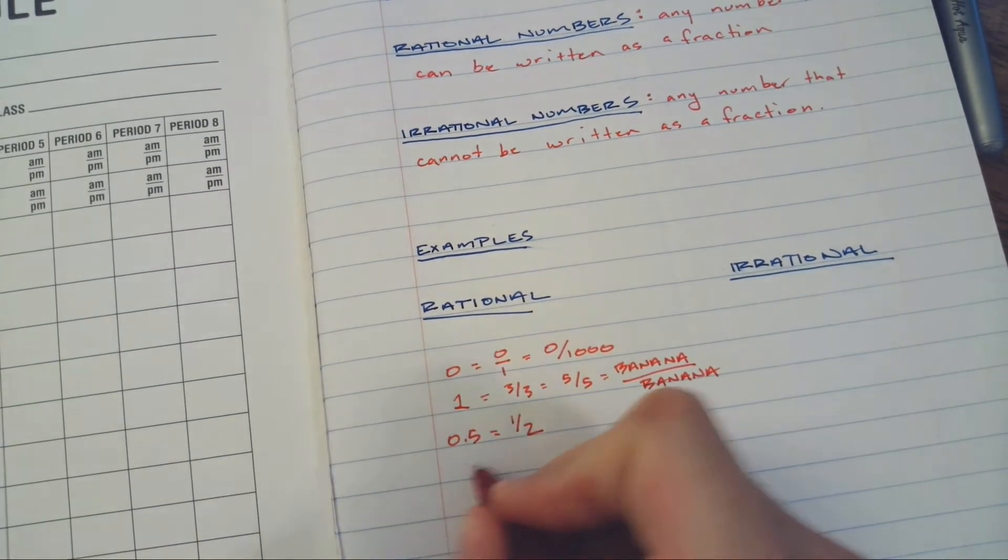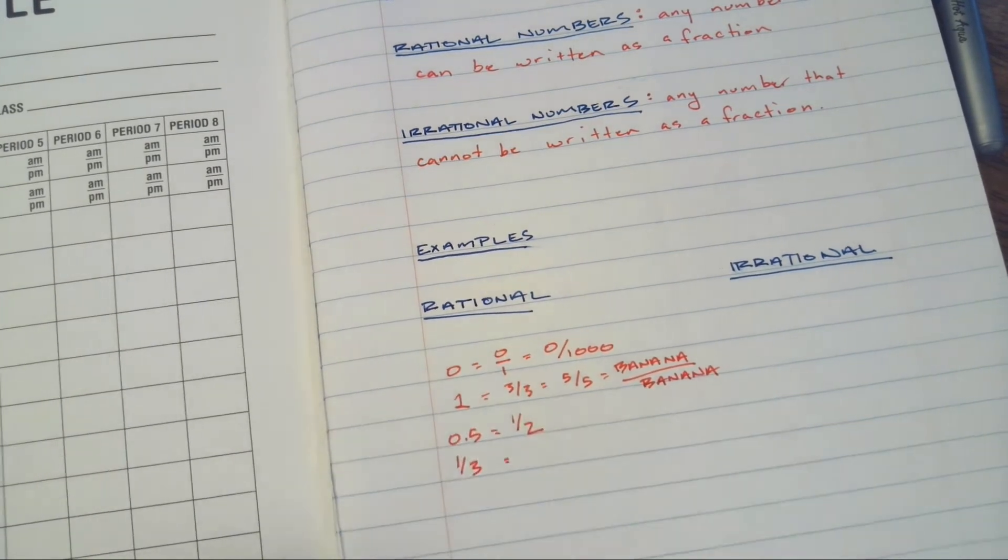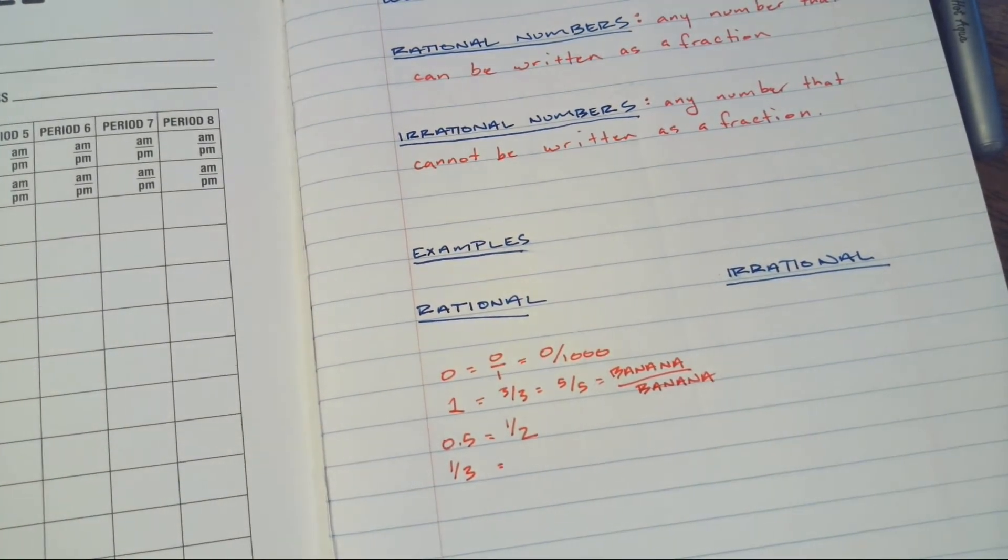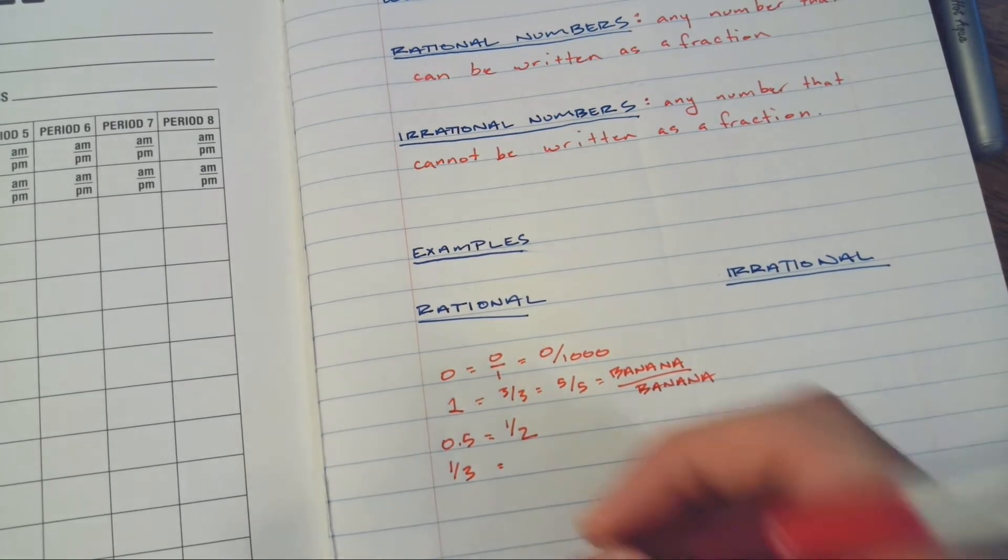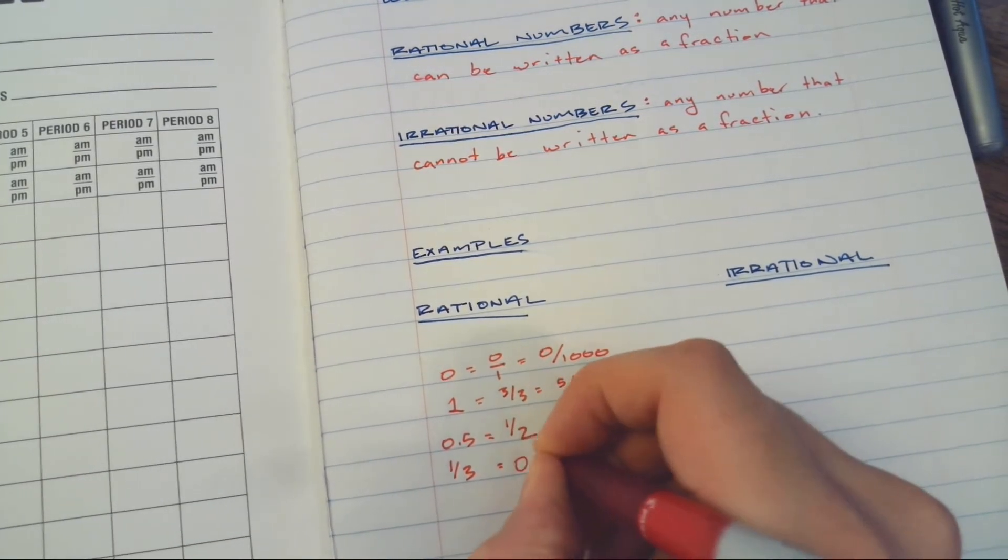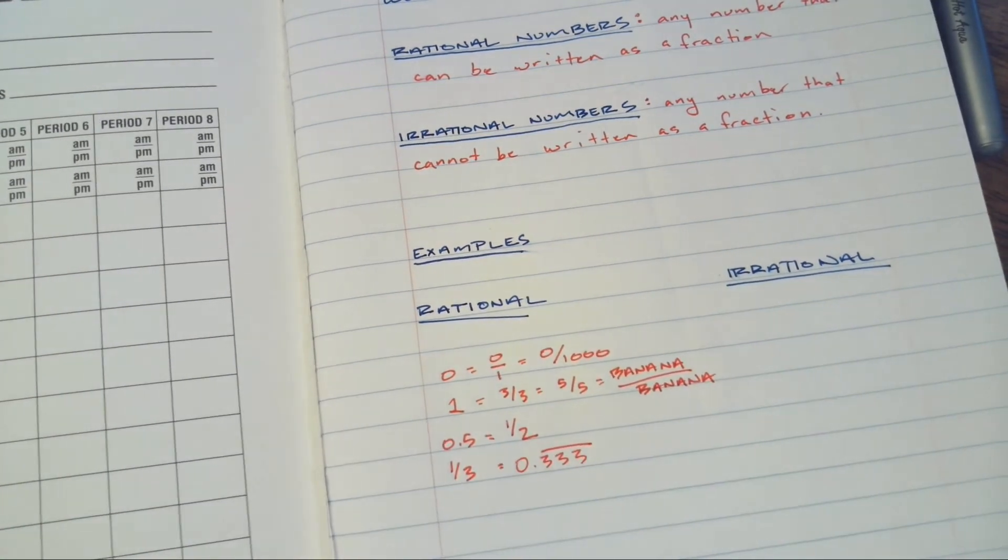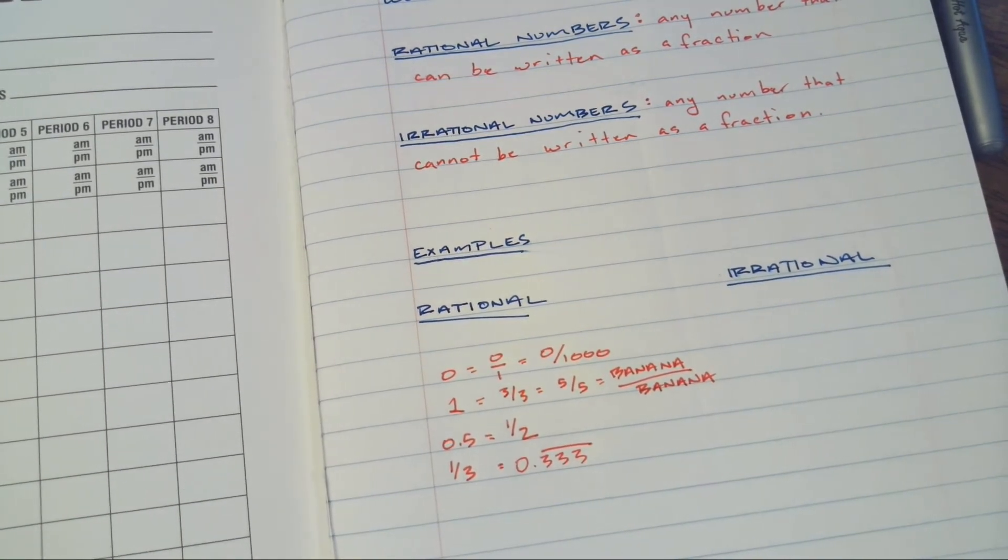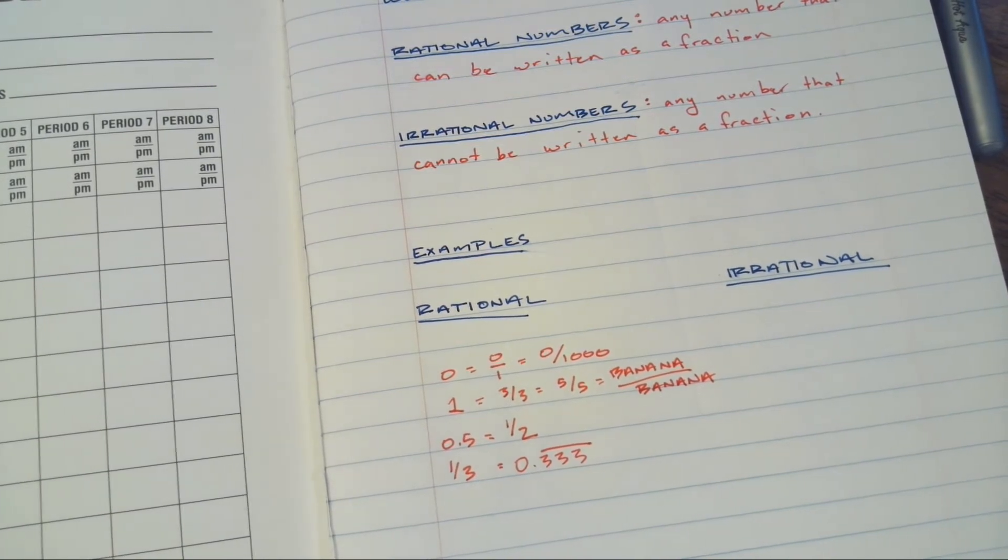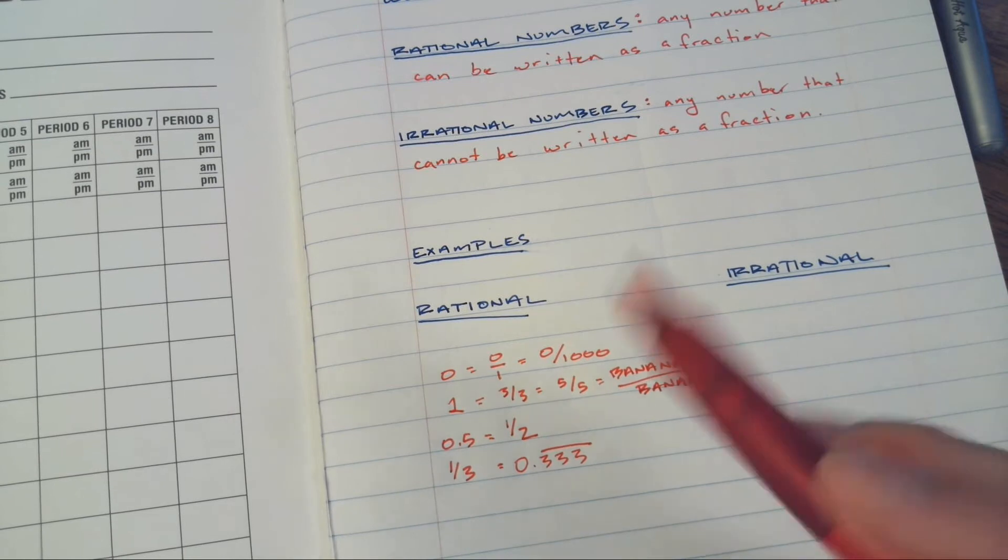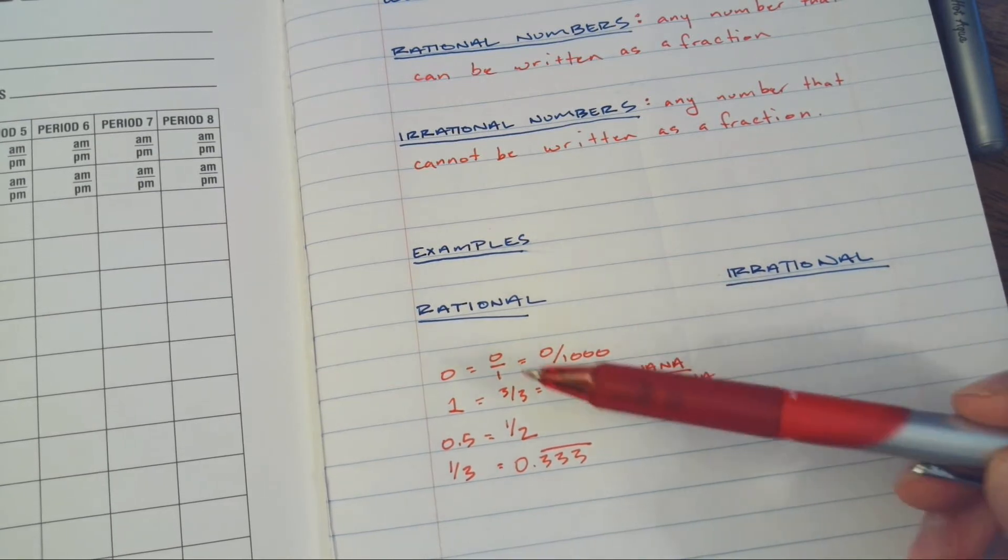Additionally, we got things like one-third. One-third can of course be written as a fraction because we just did it. But when you simplify it, if you actually write out the digits, it's going to be 0.3 repeating, and that means it never ends.